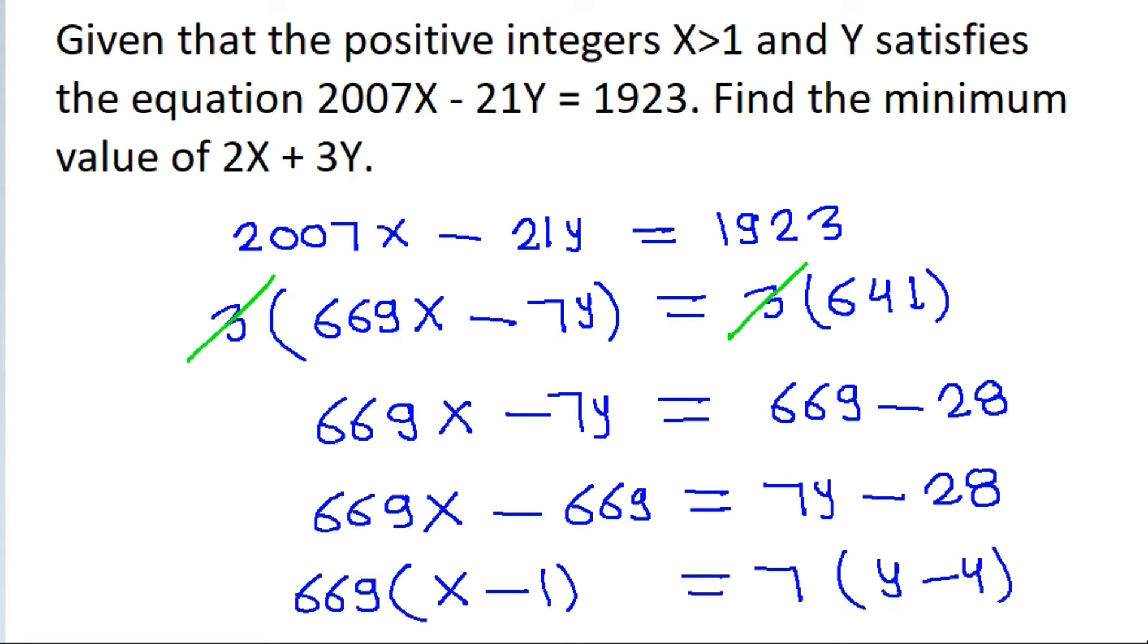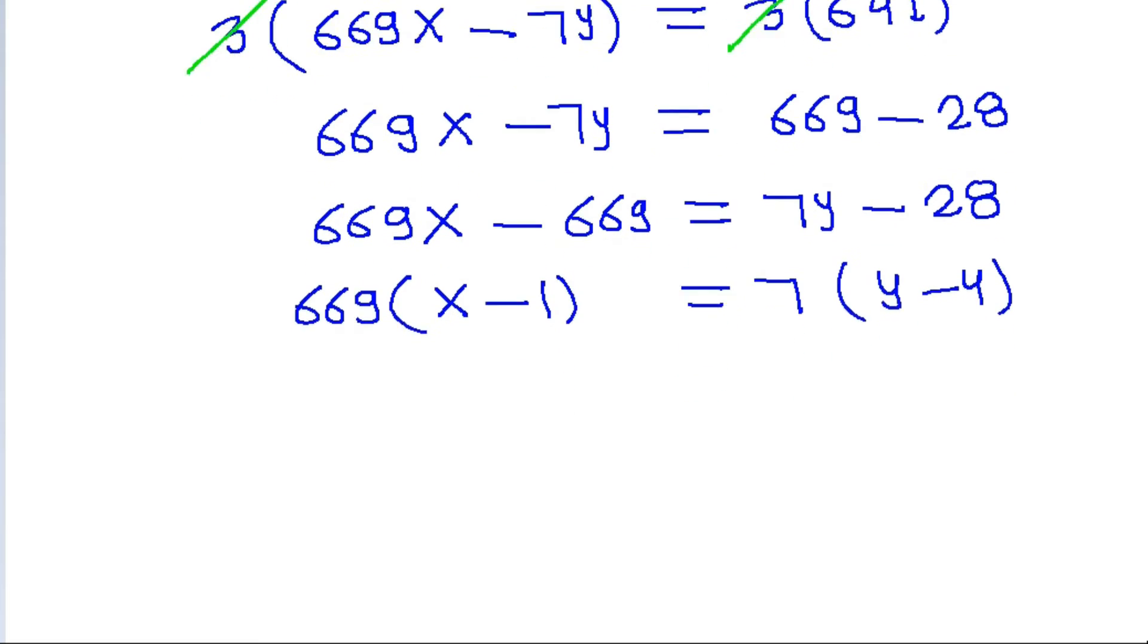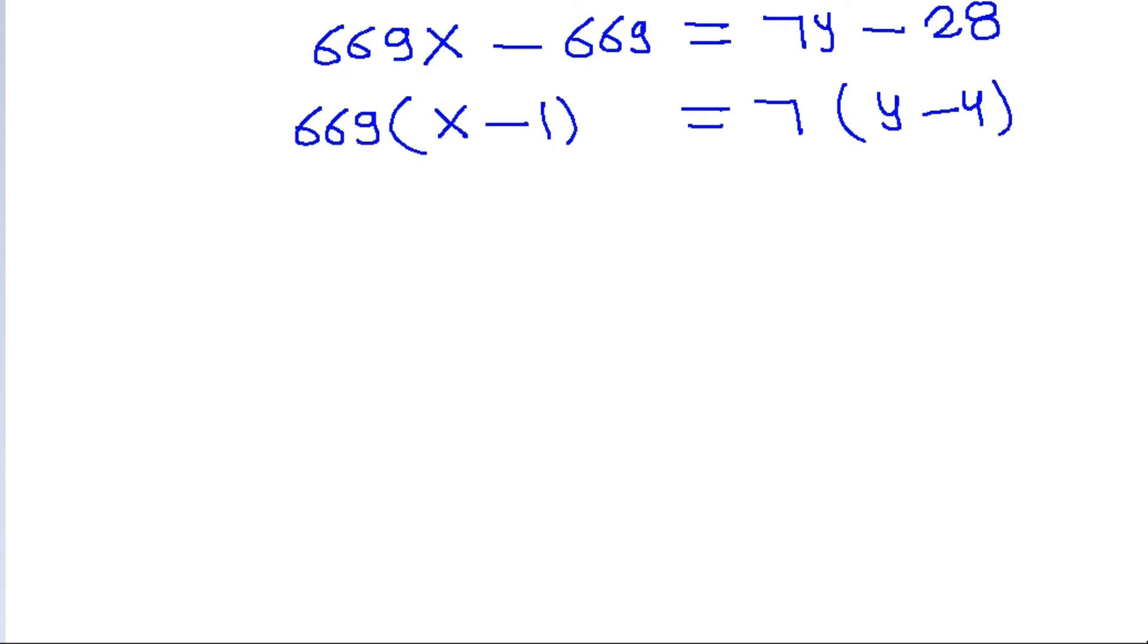And 669 is not a multiple of 7. That means x minus 1 must be multiple of 7. It must be in the form of 7t and y minus 4 it should be equal to 669t.